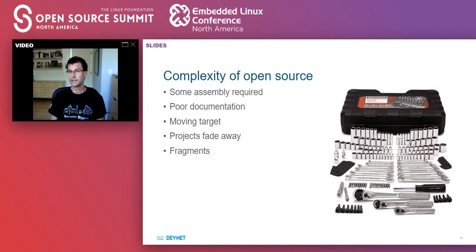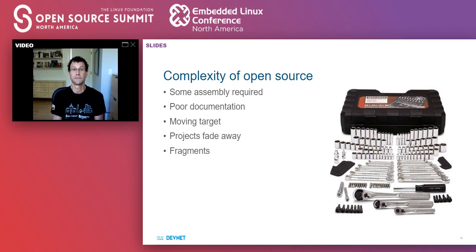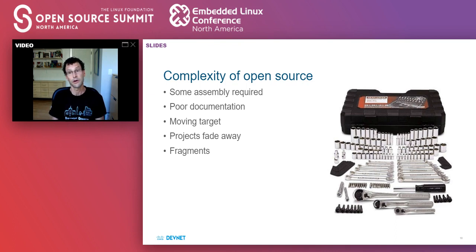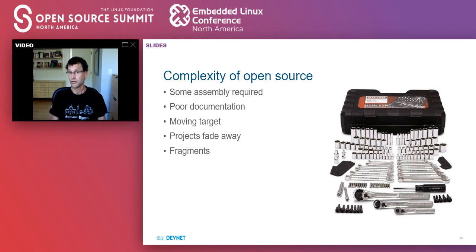Even when you have very well documented and great open source projects, they generally focus on a specific aspect and provide some specific functionality — they don't actually provide an entire solution. In order to get a solution, you need to take multiple different open source projects, perhaps write some code of your own, and integrate them all together. That's hard to do, especially as all these different projects are moving on their own trajectories with their own release cycles. So there are some real complexities and challenges with using open source and building a product on top of it.